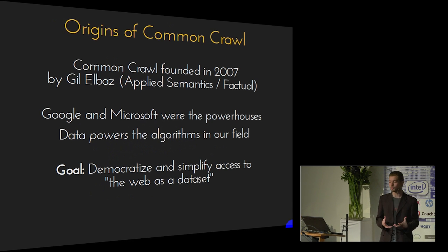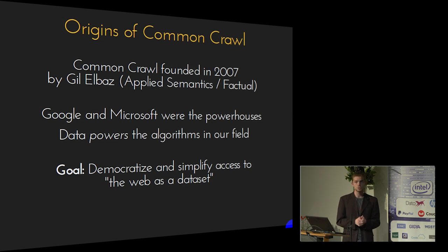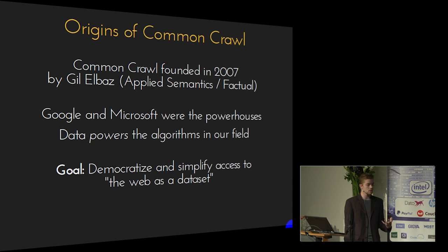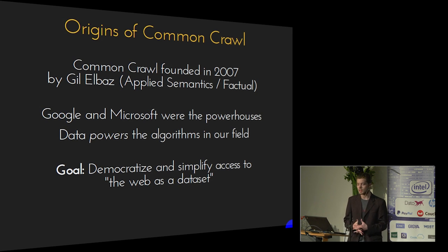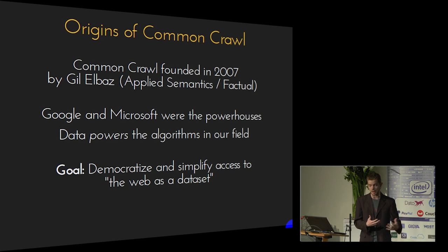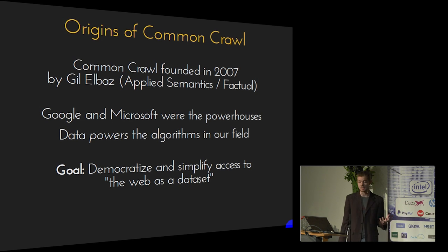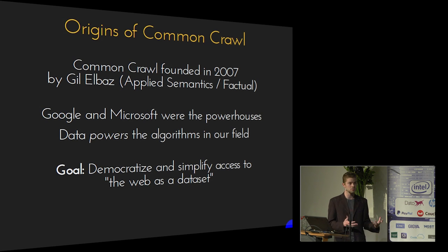To give some context on how Common Crawl came about — how a non-profit gives away data for free — we can jump back to 2007, when it was founded by Gil Elbaz. Gil is the founder of Applied Semantics and Factual; Applied Semantics was eventually acquired by Google. He saw the amazing things Google was doing with the web as a dataset, but in those days your only options were Google or Microsoft. His idea was to democratize and simplify access to the web as a dataset, enabling anyone — startups or academics — to use it.